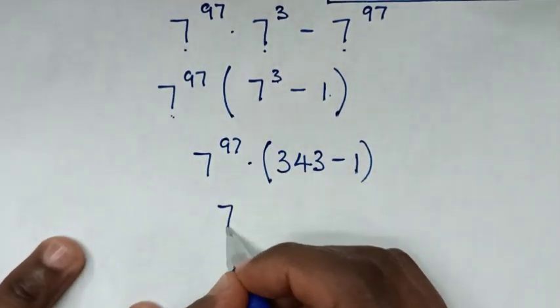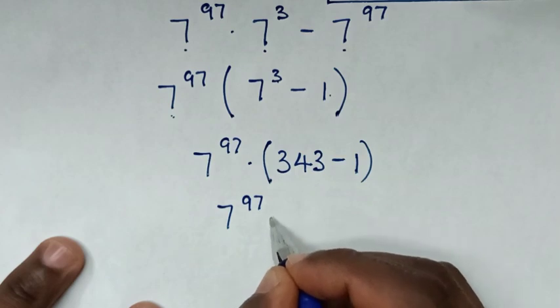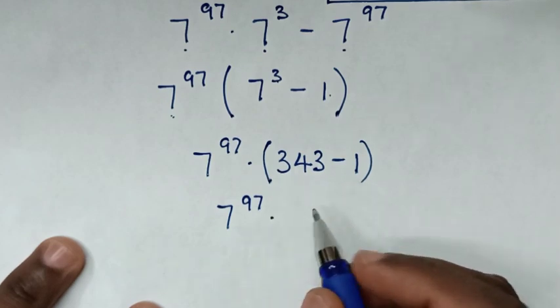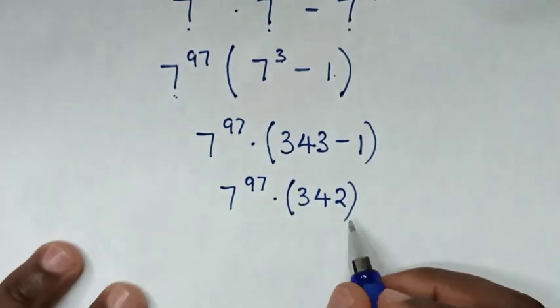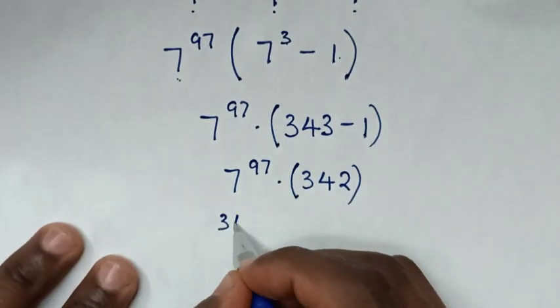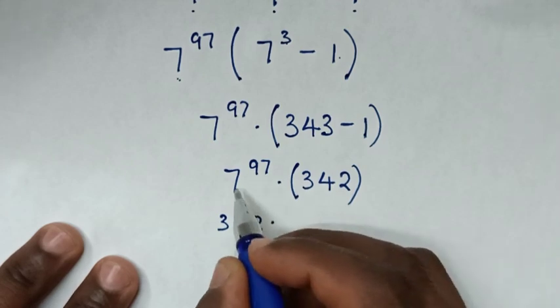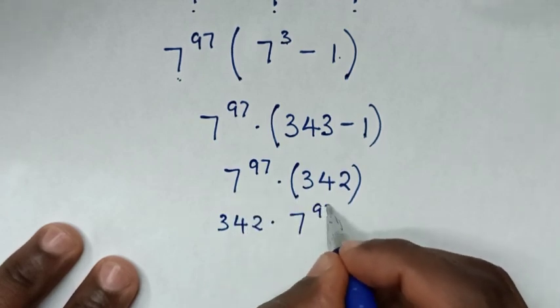Then we'll open the bracket, it will be 7 power of 97, then we'll open the bracket, it will be 342 times this 7 power of 97.